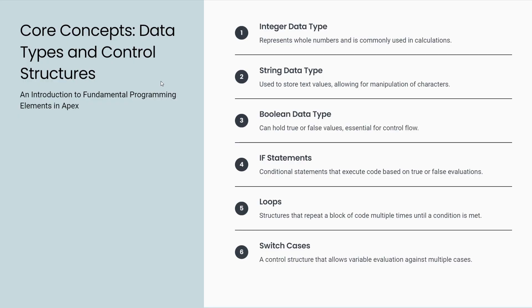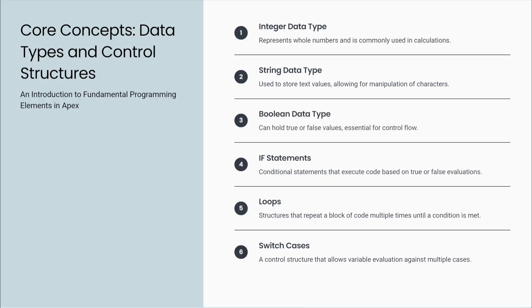For the core concepts — data types and control structures: the Integer data type represents whole numbers and is commonly used in calculations. The String data type is used to store text values, allowing manipulation of characters. The Boolean data type holds true or false values, essential for control flow. IF statements are conditional statements that execute code based on true or false evaluations. Loops are structures that repeat a block of code until a condition is met. Switch cases are control structures that allow variable evaluation against multiple cases.